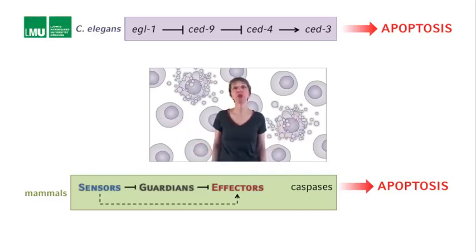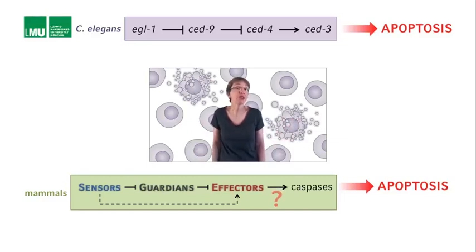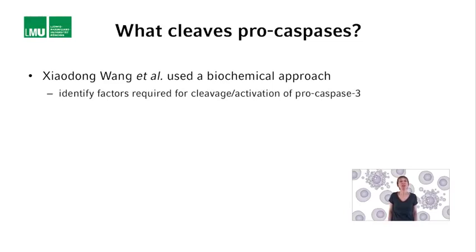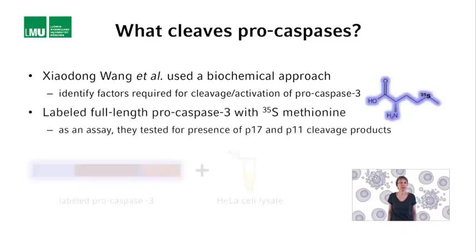How might members of the BCL2 superfamily control the activity or activation of caspases? Can the effectors directly bind to procaspases and cause their activation? To find out, Xiaodong Wang and his co-workers, then at Emory University School of Medicine in Atlanta, used a biochemical approach. Their goal was to identify the factors required for the proteolytic cleavage and therefore activation of procaspases — and procaspase-3 in particular. As an assay, they used the cleavage of procaspase-3 into its p17 and p11 subunits.